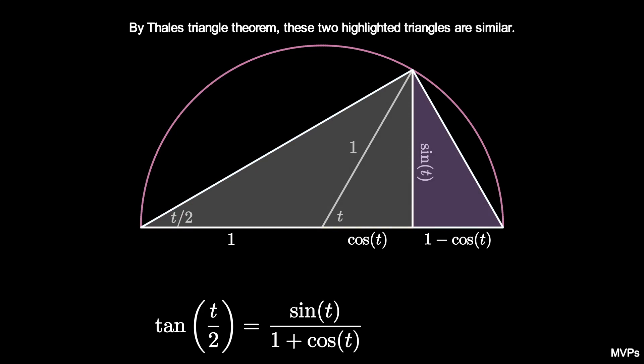Equating the leg ratios then tells us that the sine of t over 1 plus the cosine of t is equal to 1 minus the cosine of t over the sine of t. The semicircle has given us two formulas for the tangent of half an angle.